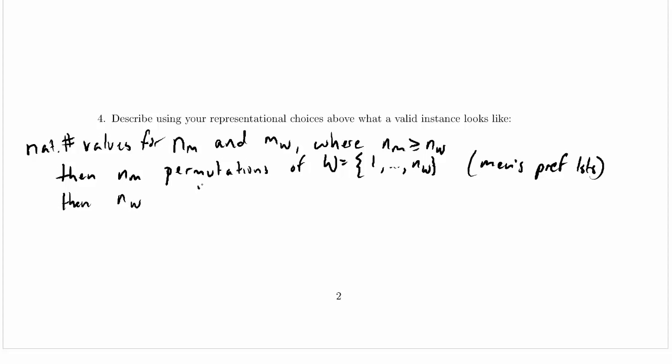NW permutations of M equals 1 up to NM, and those are the women's preference lists, and that's all we need.